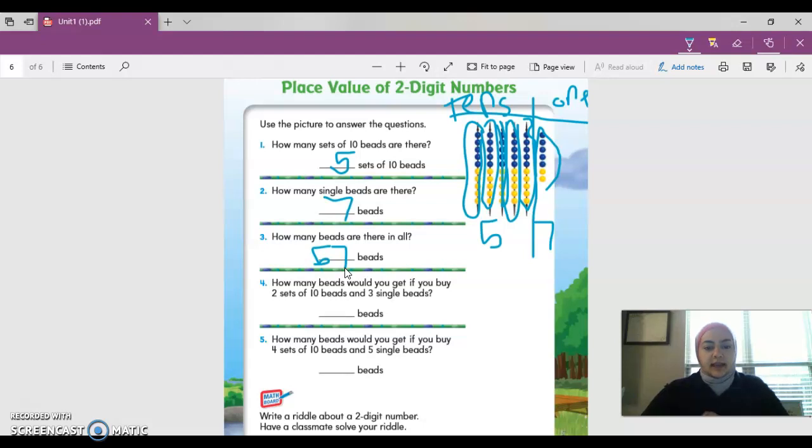How many beads would you get if you buy two sets of 10 beads and three single beads? Two sets of 10 means there's two in the tens place. Looking at my board, there's two in the tens place. He's buying two sets of 10 and three single beads. Three in the ones place. What number does that make? 23. You're right. 23 beads.